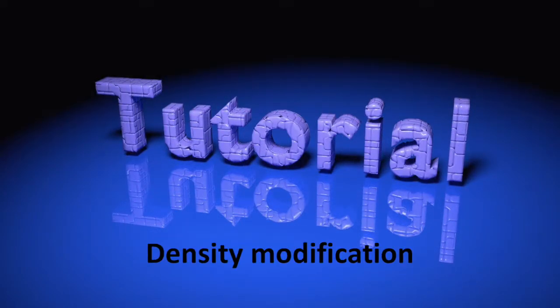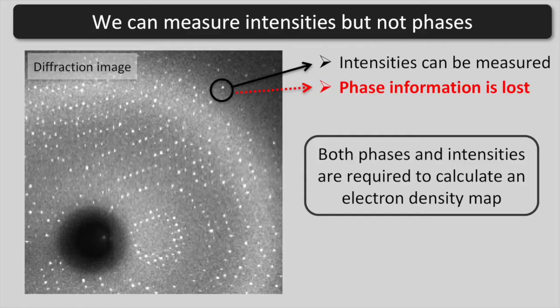Today we're going to learn about density modification. In a diffraction experiment, we can directly measure the intensities of diffraction spots. However, the phase information is lost. Both phases and intensities are needed to calculate an electron density map.